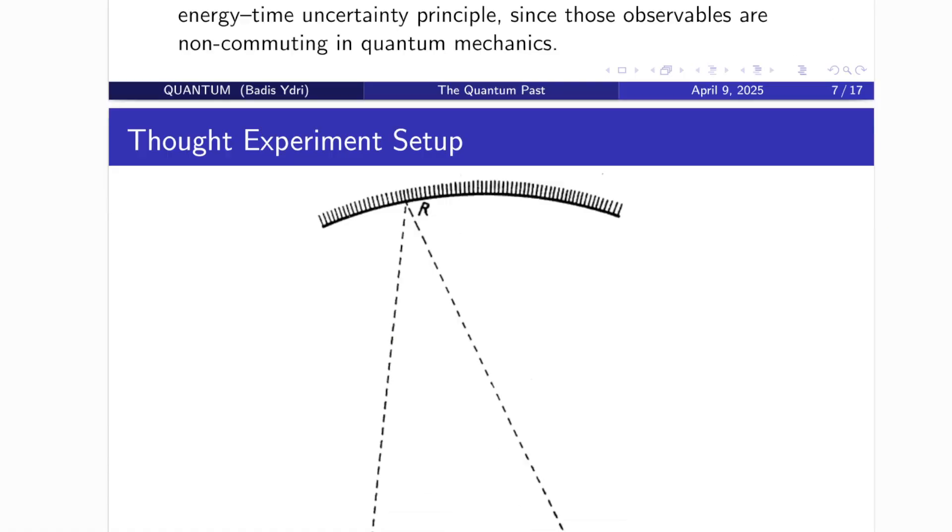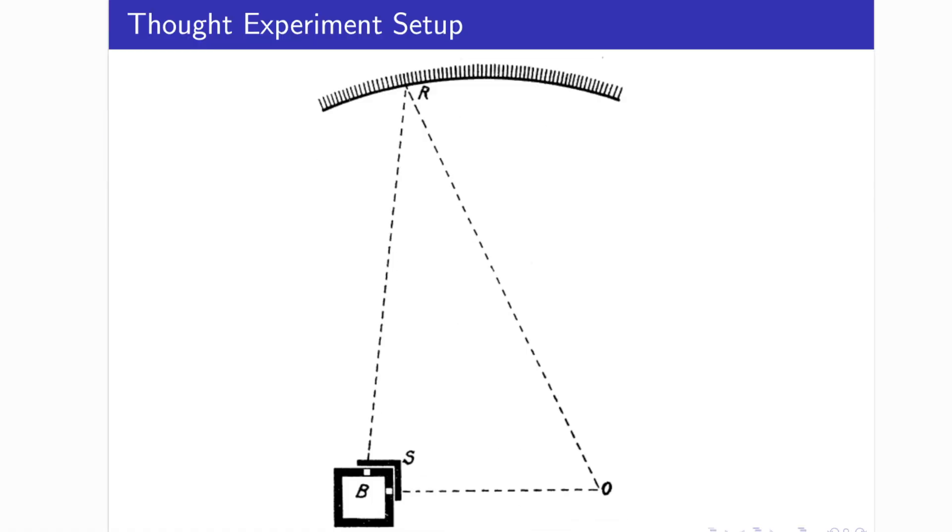This setup is not just about timing. It's a trap for logic. Because if the observer could deduce both the energy and the arrival time of the second particle using measurements from the first, they would be violating one of the most fundamental rules of quantum mechanics, the uncertainty principle. That's because in quantum theory, energy and time are non-commuting quantities. You cannot know both with arbitrary precision.